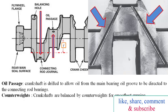The crankshaft is drilled to allow oil from the main bearing oil gallery to be directed to the connecting rod bearing. These holes are usually located where the crankshaft loads and stresses are the lowest. The edges of the oil holes are carefully chamfered to relieve stresses.